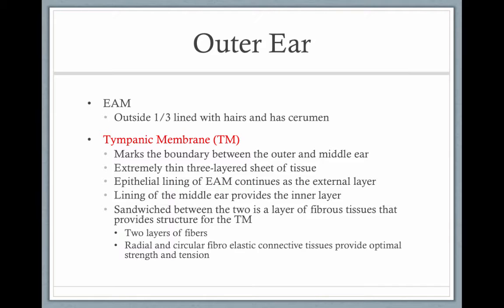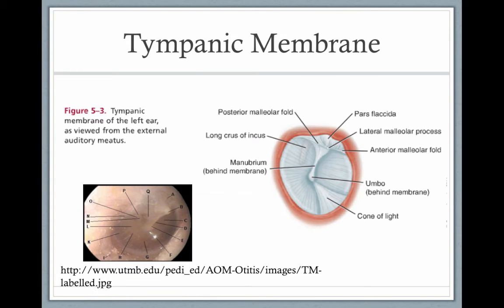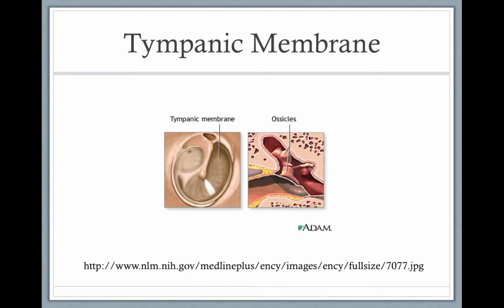The tympanic membrane marks the boundary between the outer ear and the middle ear. It's an extremely thin, three-layered sheet of tissue. The first layer is the skin of your ear canal, then there's a thick, tough, fibrous layer, and the third layer is made up of the skin of your middle ear. It sits at an angle and is a very thin and efficient vibrating system.